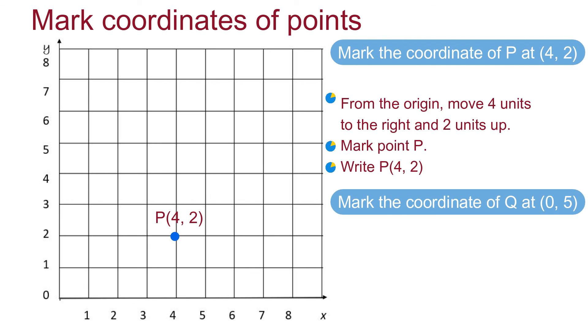Mark the coordinates of Q at 0, 5. Again, from the origin, as you can see, x is 0. So that means you don't have to move to the right. So, from the origin, move 5 units up. Y is 5. So move 5 units up. Mark the point Q. Write the coordinate of Q as 0, 5.